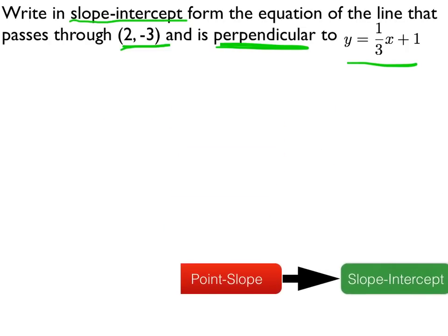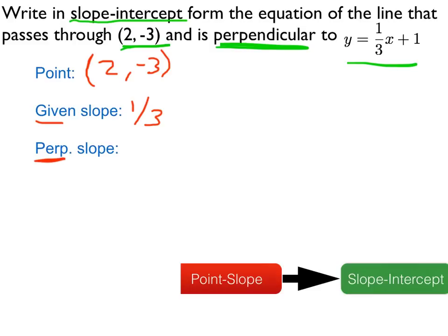So let's begin with point-slope form. Of course the given point is 2, negative 3. The slope that's given to us is in this line, we have 1 third is the given slope. However, we want a line that's perpendicular to that slope, and perpendicular slopes are opposite reciprocals.